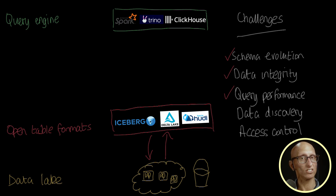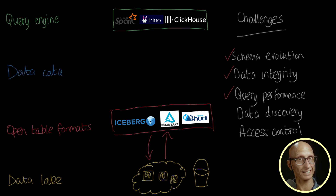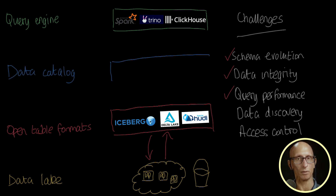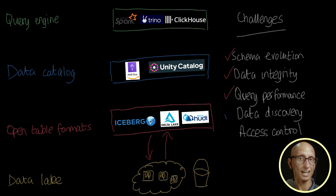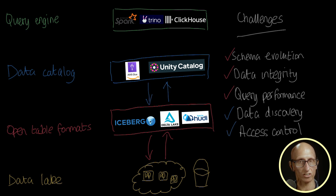But we still haven't solved the data discovery and access control issues. That's where our next layer — the data catalog — helps. Two popular catalogs are AWS Glue and Unity. For data discovery, the data catalog will tell us what tables are available to query. The data catalog also controls access and provides the appropriate credentials to query the data lake.